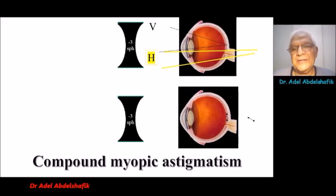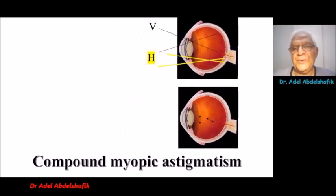Now, the vertical is on the retina, and the horizontal is behind the retina. Let's repeat again. This is to start with, everything is forward. When we put minus lenses, we are going to push things back and back and back.